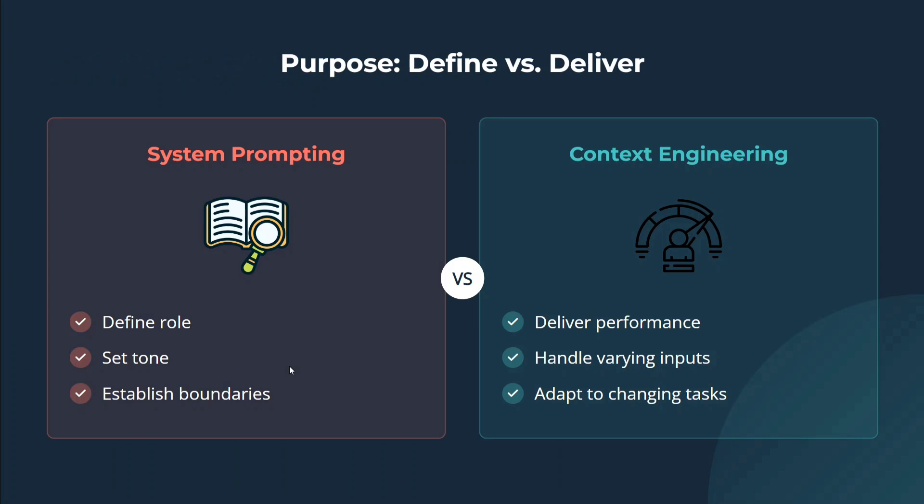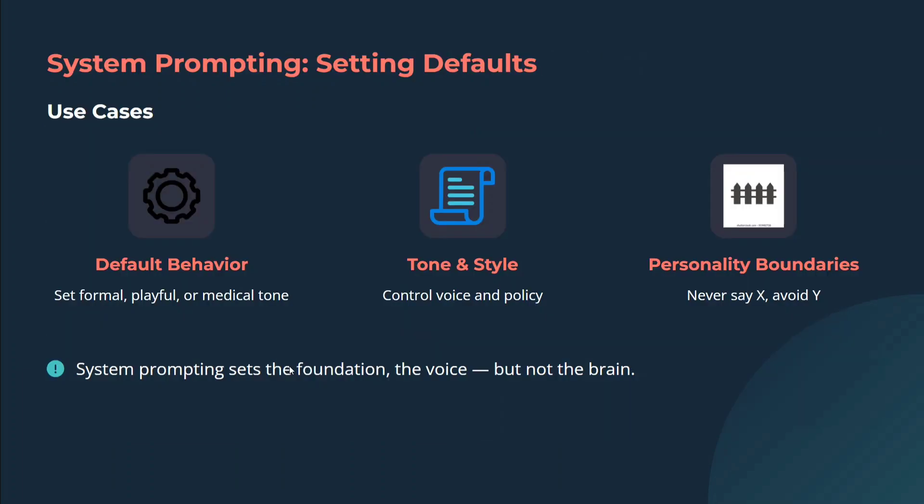System prompting, as mentioned, is a subset of context engineering, but it is more rule-based. System prompting is about setting defaults — setting the behavior, tone and style, personality and boundaries: never say X, avoid Y. Control voice and policies — set formal, playful, or medical tone. It sets the foundation, the voice, but not the brain — it's not telling the model how to think.